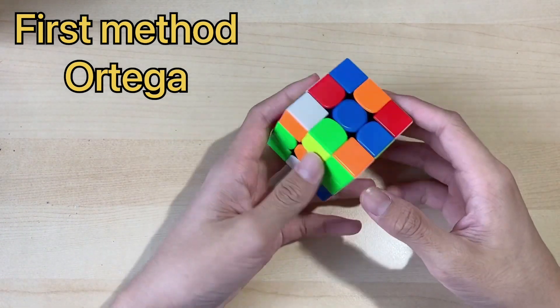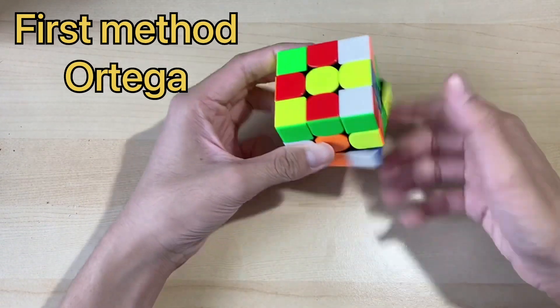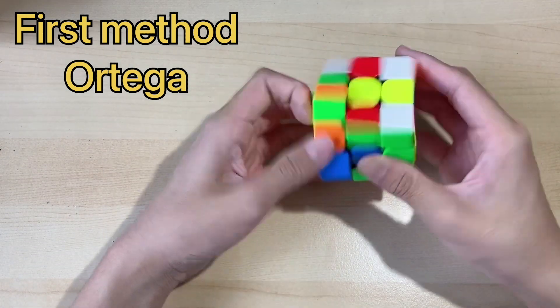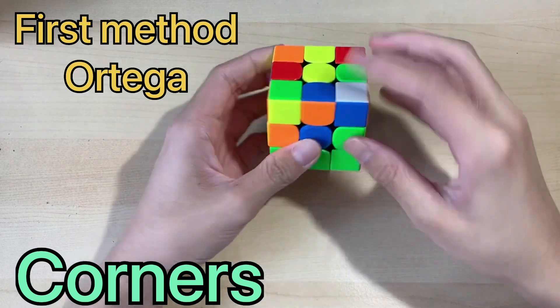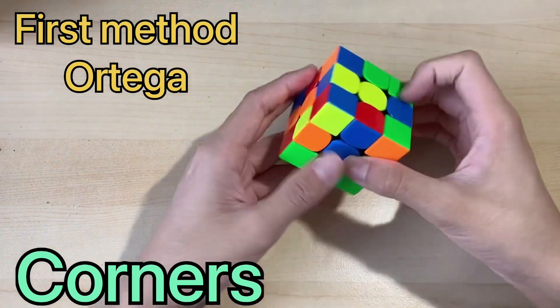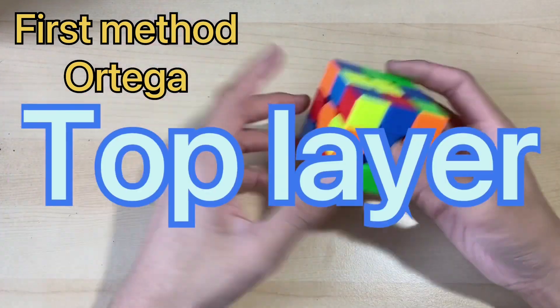I think it's scrambled, so let's start doing the white face cross. Done. Then we'll need to insert all the corners, which doesn't matter if it is correct like this. Then we'll need to do the top layer.